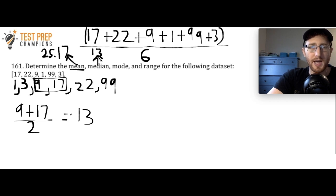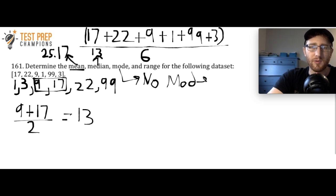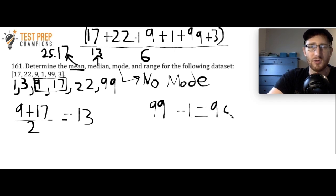The mode is the most frequently occurring number. In this data set every number appears just once, so there is no mode. For the range, take the largest number (99) minus the smallest number (1), which gives a range of 98.